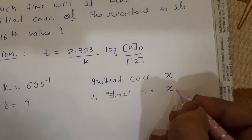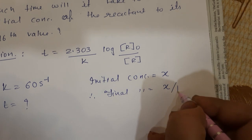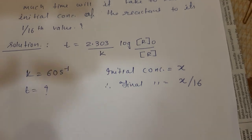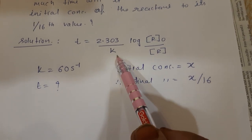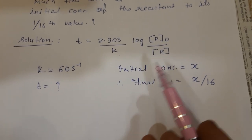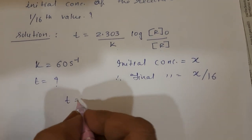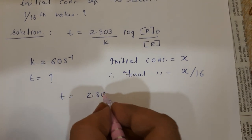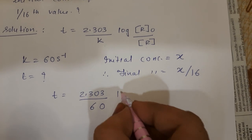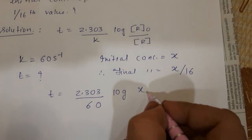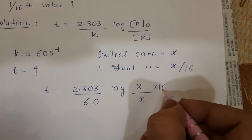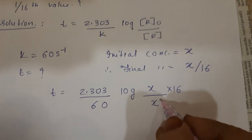Using the same formula: t equals 2.303 upon k log original concentration upon final concentration. So t equals 2.303 divided by 60 times log x upon x upon 16. The 16 will go up, and x and x get cancelled. What's left is log 16.